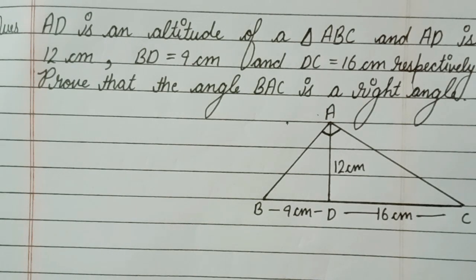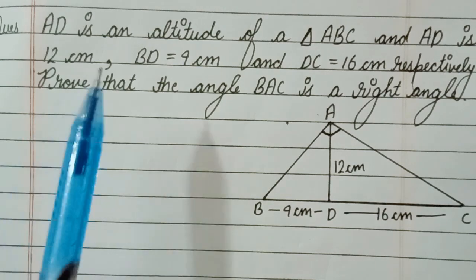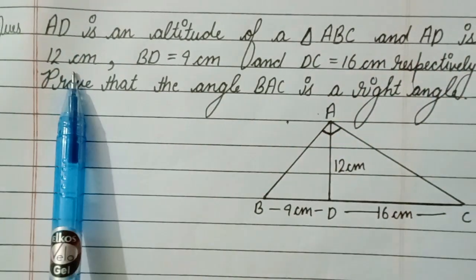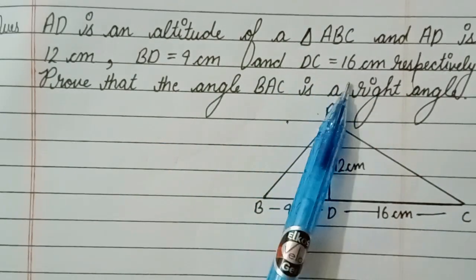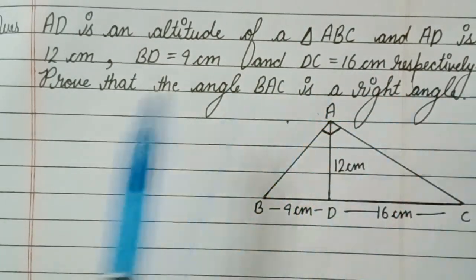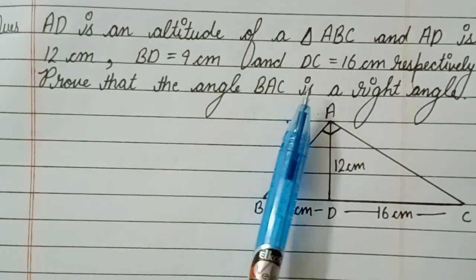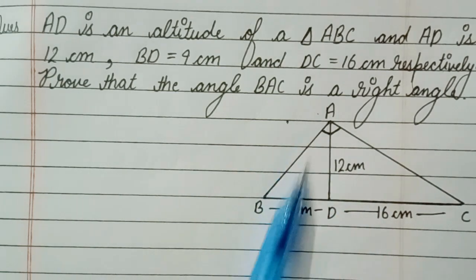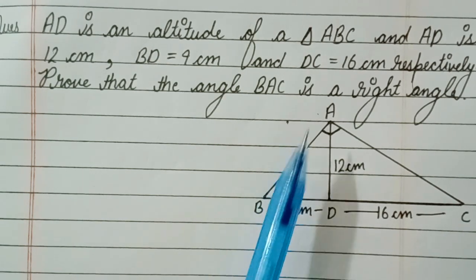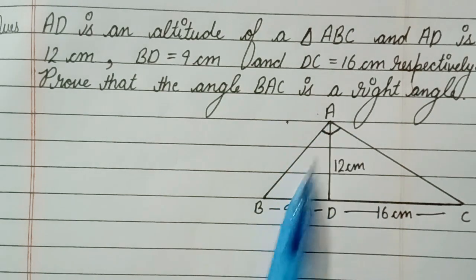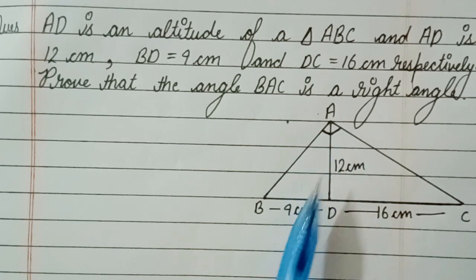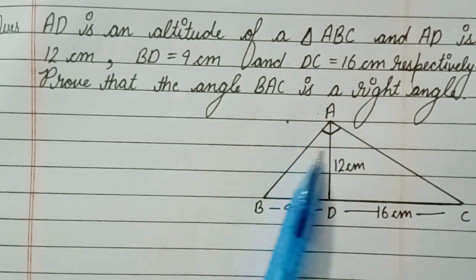Hi friends, welcome back to my channel. Today we will solve this question: AD is an altitude of triangle ABC, where AD is 12 cm, BD is 9 cm, and DC is 16 cm. We have to prove that angle BAC is a right angle — meaning this angle is 90 degrees. AD is perpendicular, which is the altitude of triangle ABC.